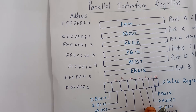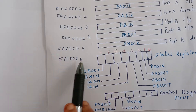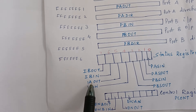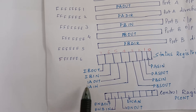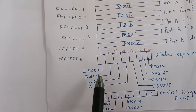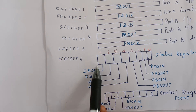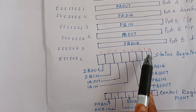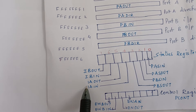This is the status flags section. The status register also has 4 interrupt flags. Port A interrupt in, Port A interrupt out, Port B interrupt in, and Port B interrupt out — these are the 4 interrupt flags in the 8-bit status register.